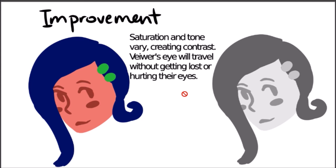So when you want something to stand out, you make one thing pop, and when you want to frame it, you make another thing softer. The light red leads the eye towards the dark blue hair and vice versa. Viewers will travel around the piece without getting lost or hurting their eyes like eyestrain would.